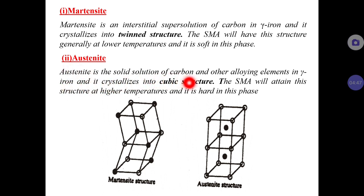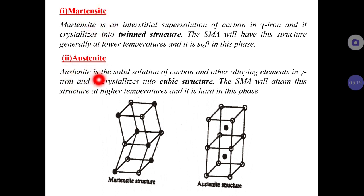The austenite phase is a solid solution of carbon and other alloying elements in alpha iron. This phase is the hard phase, or the high temperature phase. The shape memory alloy at the austenite phase will be very hard and this occurs at high temperatures. So: low temperature phase is martensite — the soft phase; high temperature phase is austenite — the hard phase. Due to heating it goes to the austenite phase; due to cooling it goes to the martensite phase.